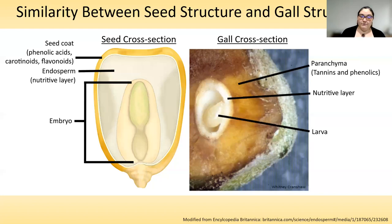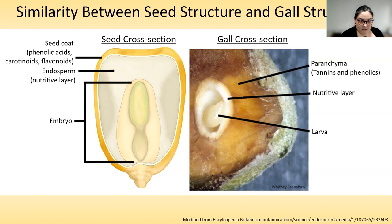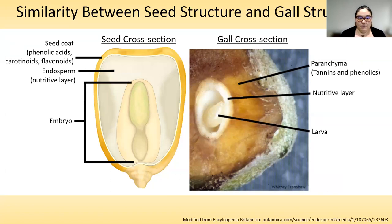What we do have are some theories. We know that gall wasp larvae are secreting proteins out into the plant tissue around them — believed to be effector proteins that trigger a particular plant response. The current theory is that they're kick-starting what we call the seed developmental cascade, turning on genes involved with developing seeds in inappropriate tissues such as twigs and leaves, rather than only in flowers at the right time of year.